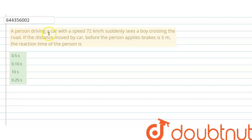A person driving a car with a speed 72 km per hour suddenly sees a boy crossing the road. If the distance moved by car before the person applies brake is 5 meter, the reaction time of the person is? And there are four options given.